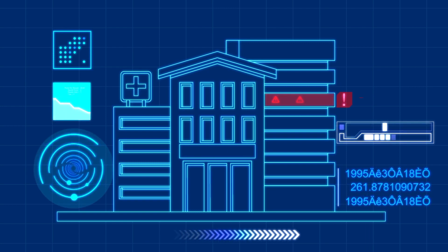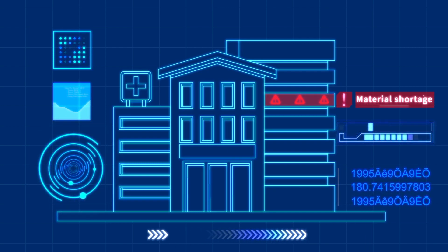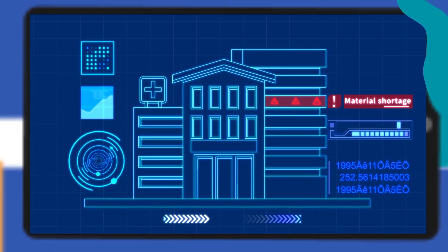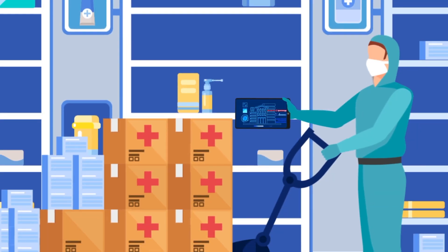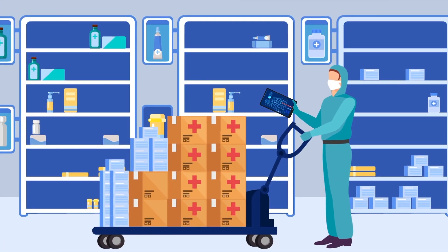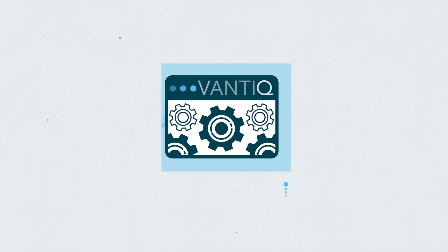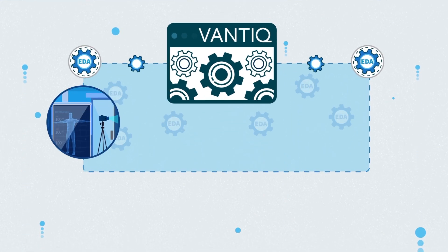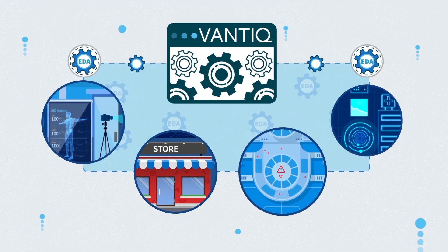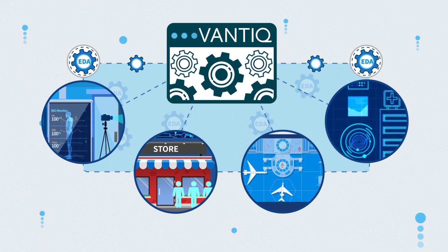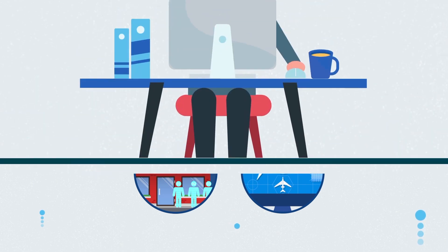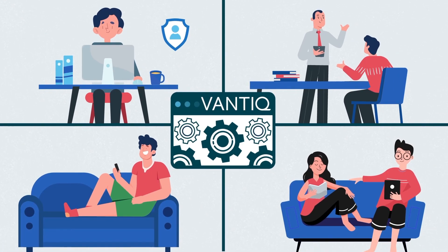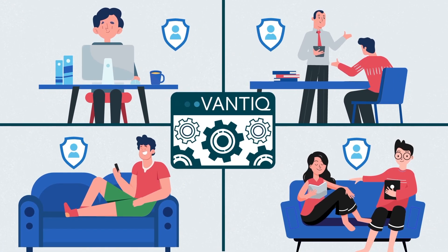Smart alerts about supply shortages let you respond before there is a problem. By coordinating how your business detects and responds to real-world data, Vantic enables you to ensure everyone is safe and trust is preserved.